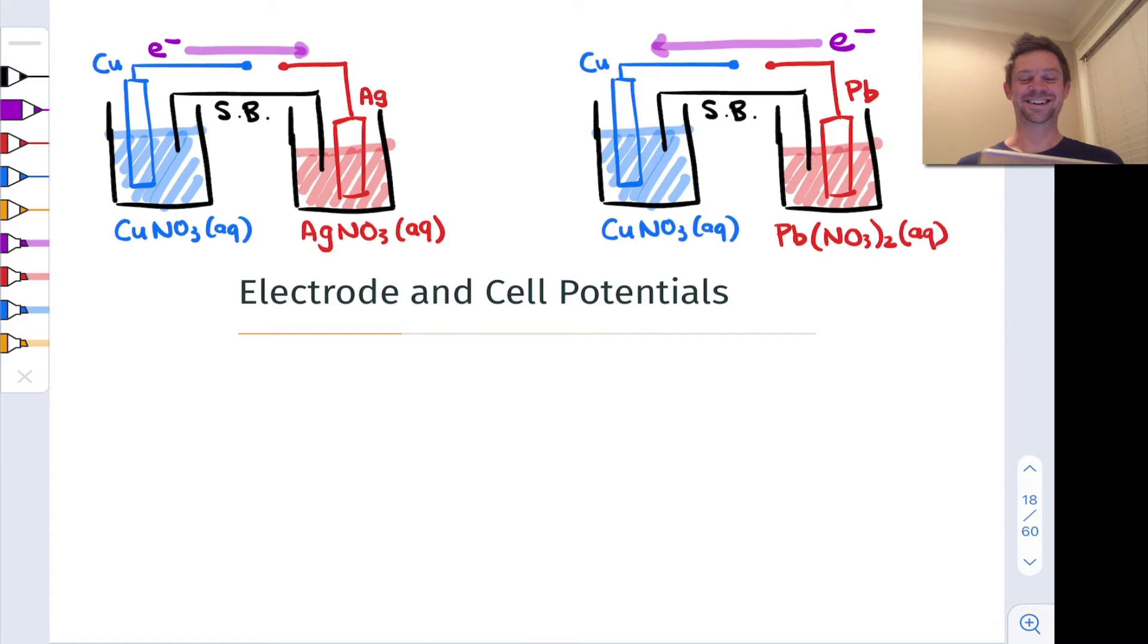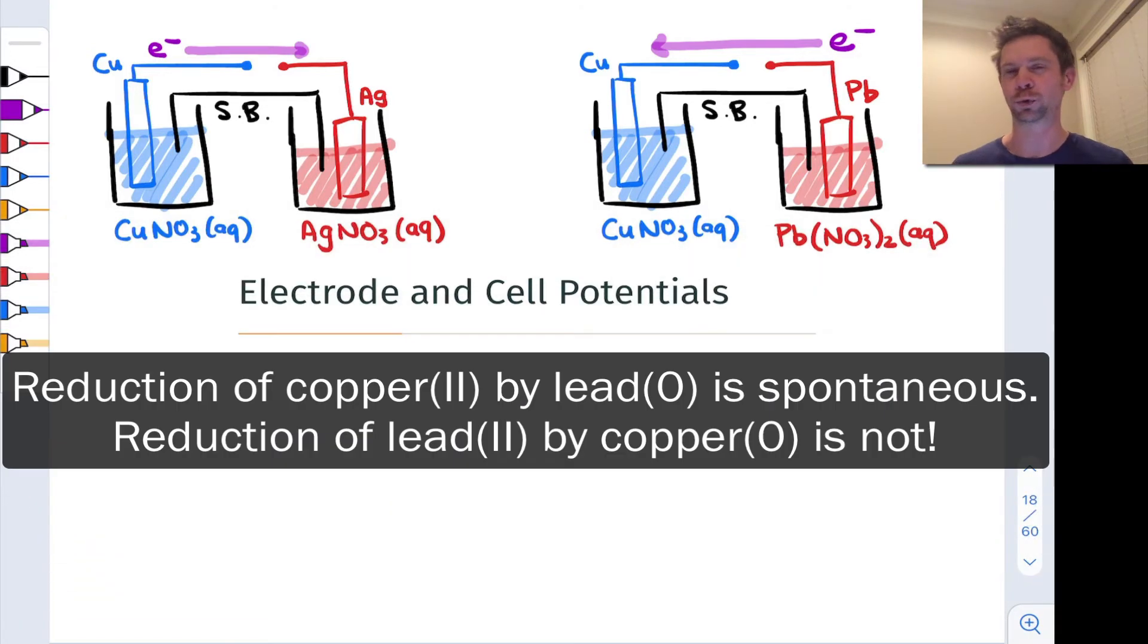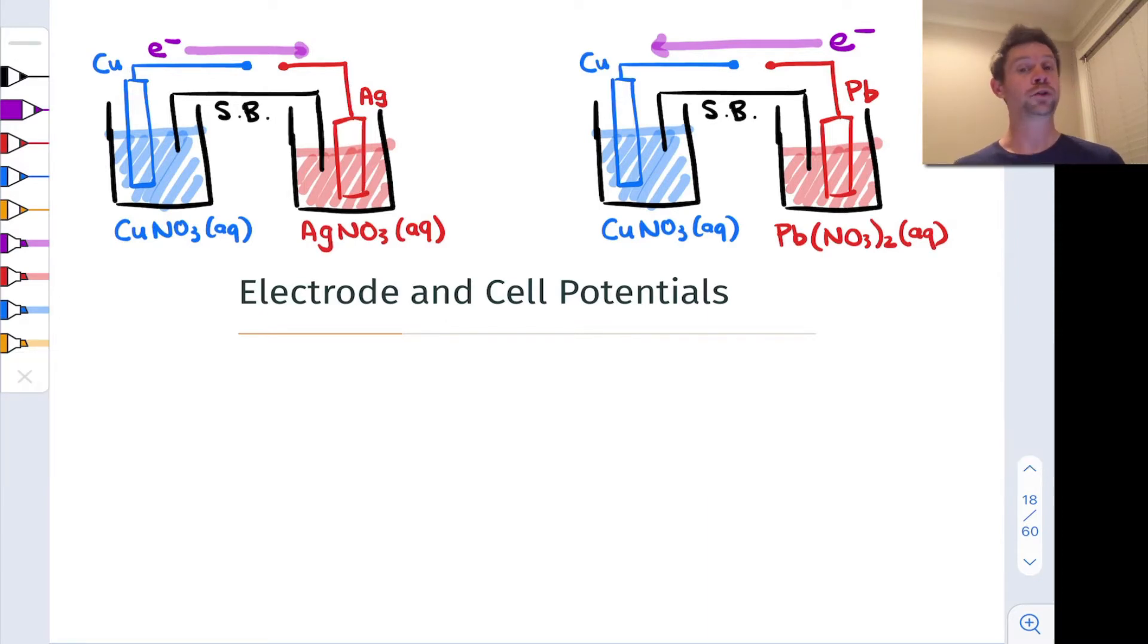As it turns out here what nature wants to do, what is thermodynamically favorable, which hints at where we're going in this section in the next view, is the reduction of copper 2+ to copper metal by lead and lead's oxidation to Pb2+.